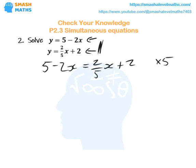but I'm just going to times the equation, the whole thing through by 5. So it gives me 25 minus 10x equals 2x plus 10.